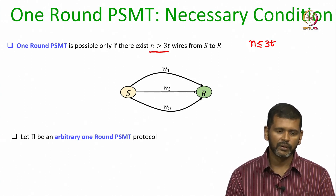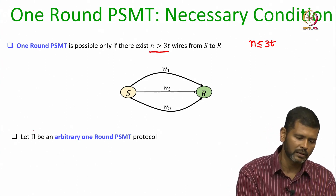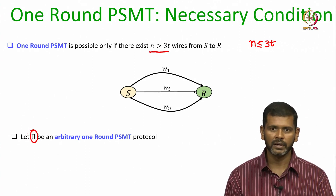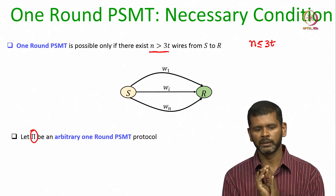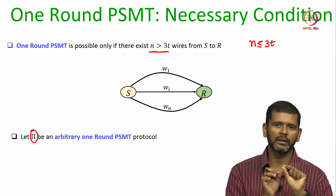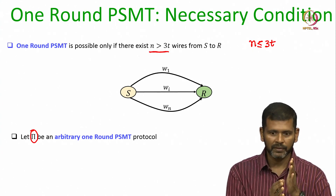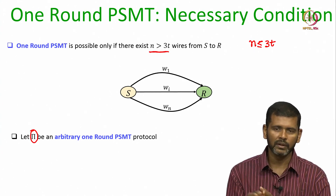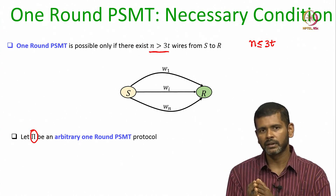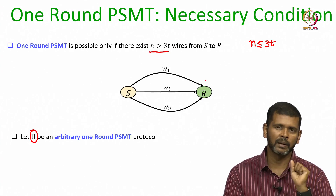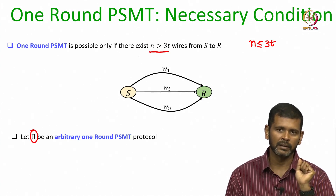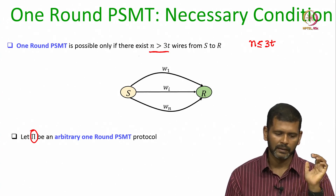We will show the following: imagine you have some abstract one round PSMT protocol, let us denote it by Pi. We do not know exactly what operations are done in Pi; we only know that Pi allows the sender to compute some messages which it communicates over the N wires, and even if up to T wires change the contents, the receiver will somehow be able to recover back the message by executing the steps of protocol Pi assigned to the receiver.